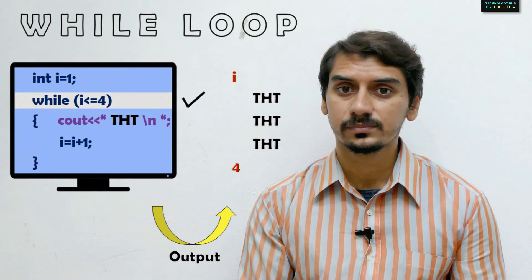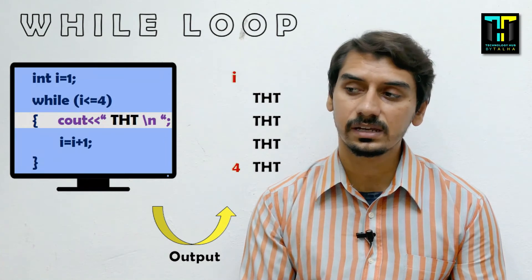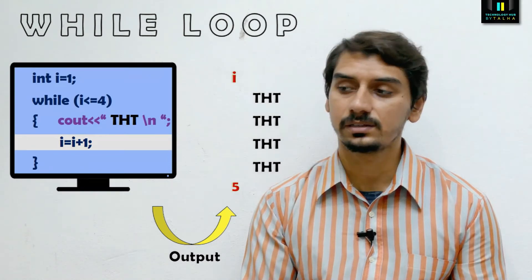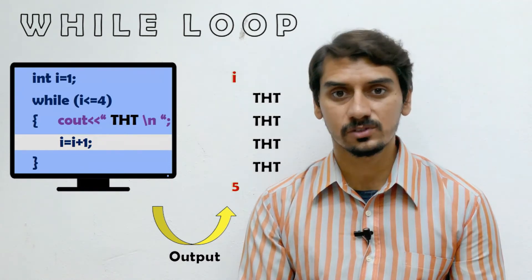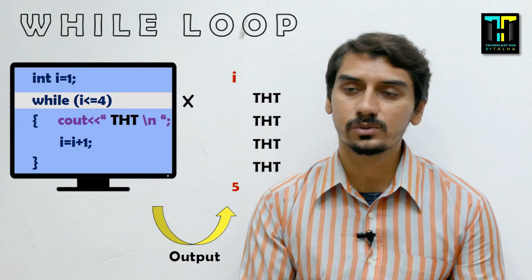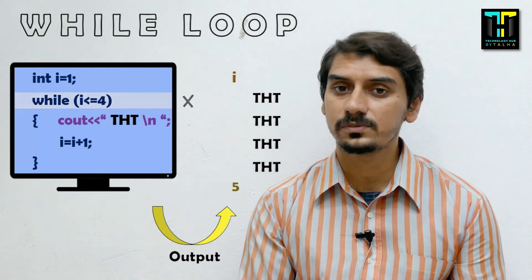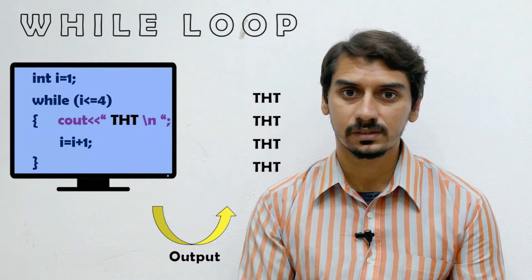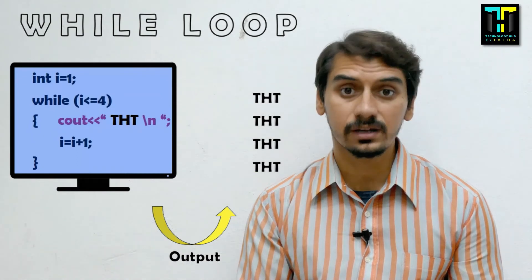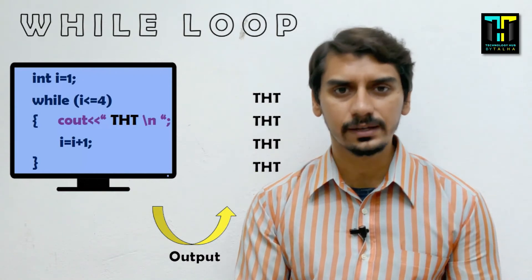Now we check the condition: 5 <= 4 is false, so the while loop terminates and execution moves outside the loop. The final output is 'tst' displayed four times. This is the complete execution process of the while loop.